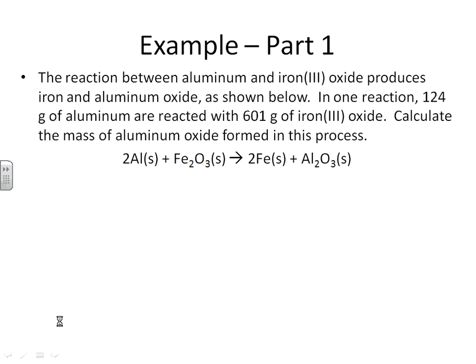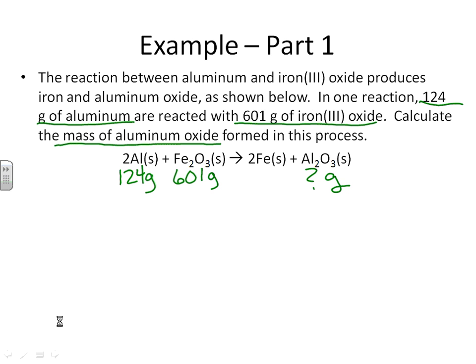Example problem: the reaction between aluminum and iron(III) oxide produces iron and aluminum oxide. In one reaction, 124 grams of aluminum reacts with 601 grams of iron(III) oxide — calculate the mass of aluminum oxide formed. This is a classic limiting reactant problem, and if you read through it, it does not contain the phrase 'limiting reactant.' We know it's a limiting reactant problem because it gives us 124 grams of aluminum and 601 grams of iron(III) oxide, and asks for the mass of aluminum oxide. They gave us mass data on two reactants and asked how much product we're going to get.